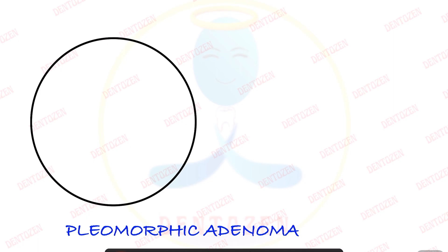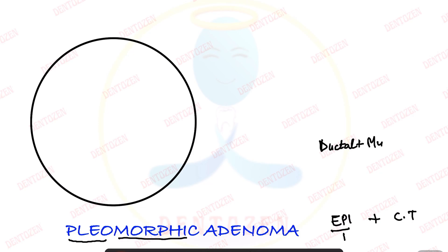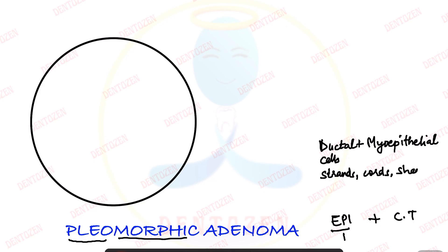Pleomorphic adenoma is a salivary gland tumour with pleomorphic appearances. It has two components: the epithelial component and the connective tissue component. The epithelial component is made up of ductal and myoepithelial cells. These cells can form different arrangements — they may lie in strands, cords, sheets, or islands.